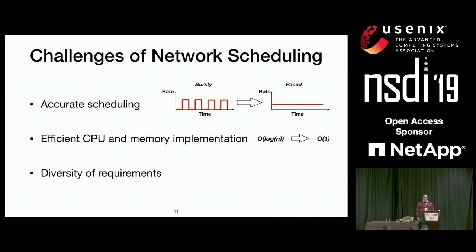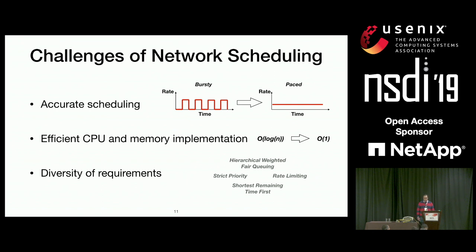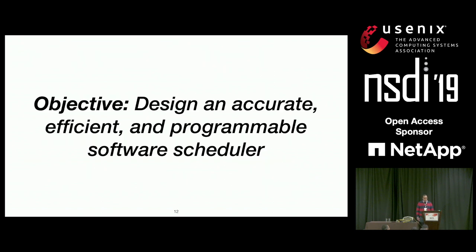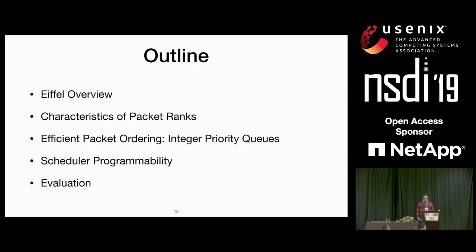The third challenge is the diversity of requirements. Modern network operators want to implement multiple scheduling policies — hierarchical scheduling, strict priority, rate limiting, or experimental ranking functions like shortest remaining time first. This led us to our objective: designing an accurate, efficient, and programmable software scheduler. For the rest of the talk, I'll tell you how we did this.